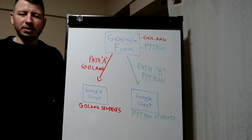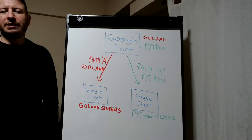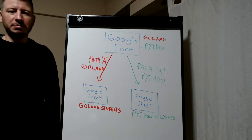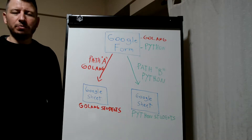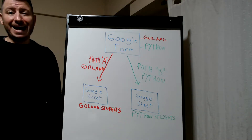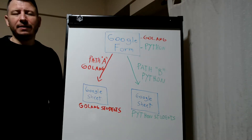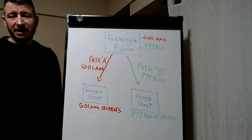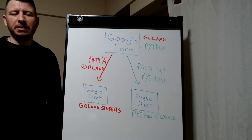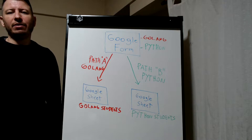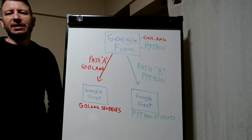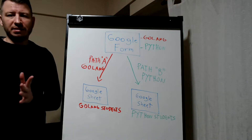Welcome to video number six of the Zapier video training series. In this video we're going to be covering Zapier Paths. Zapier Paths are a mechanism that Zapier provides to handle different conditions and different logic — you can see it as an if-then statement.